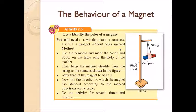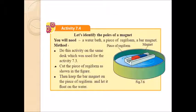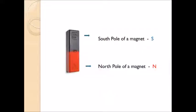The behavior of a magnet. By doing these two experiments, activity 7.3 and activity 7.4, you can understand that the magnet always stays still in between north and south. We can identify that the north pole of a magnet is the north pole of the compass and the south pole of the magnet is the south pole of the compass. We mark the south pole of the magnet as S, north pole of the magnet as N. Here south pole, here north pole.